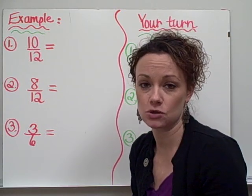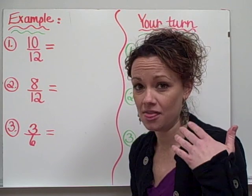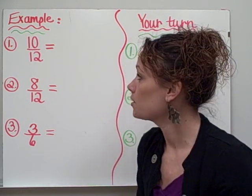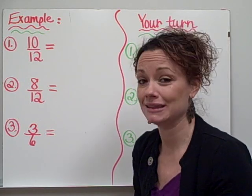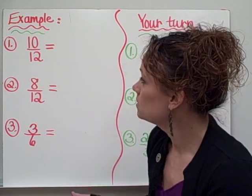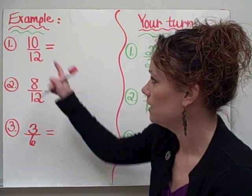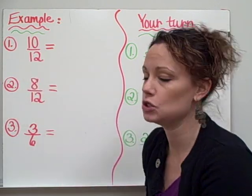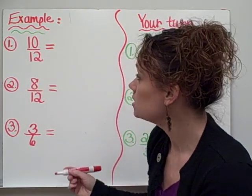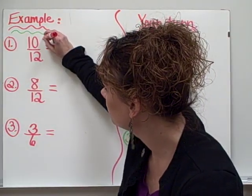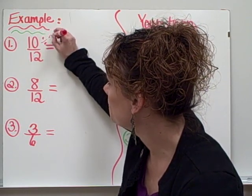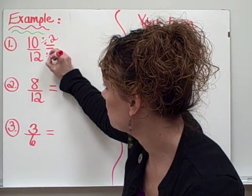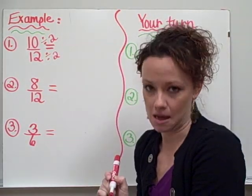And you can do this a number of ways. You can do mental math in your head. Think about your multiplication facts. Think about your division facts. Or you can go ahead and start listing numbers as well. So I know that the number 2 is divisible by 10 and I know that 2 is divisible by 12 because 2 goes into both of those numbers. So I'm going to divide my numerator by 2 and I'm going to do the same exact thing to my denominator.